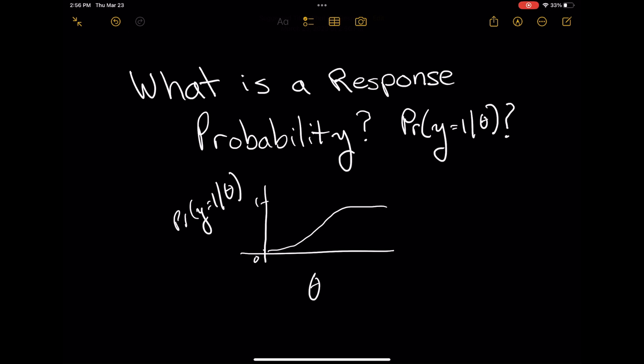One way of thinking about it is at the individual level. If I have this theta naught level of ability, then my probability of responding or correctly endorsing an item is that probability. That is, if I have some likelihood of giving a certain response.